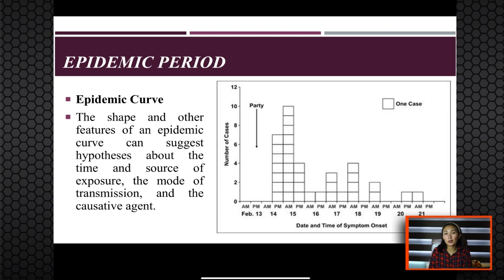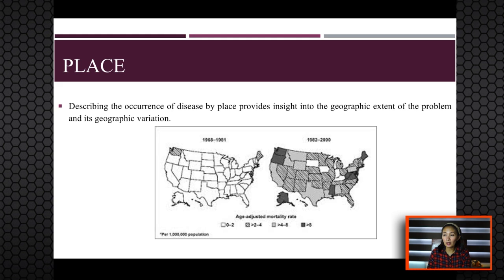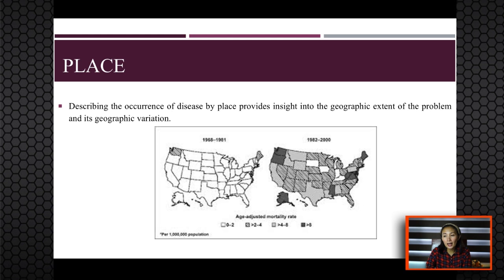Another scope of descriptive epidemiology is place. When we describe the occurrence of disease by place, it provides insight into the geographic extent of the problem and its geographic variation. Characterization by place refers not only to the place of residence, but to any geographic location relevant to disease occurrence, such as place of diagnosis or report, birthplace, employment site, school district, or recent travel destination. The unit may be as large as a continent or country or as small as a street address, a barangay, a hospital wing, or an operating room.